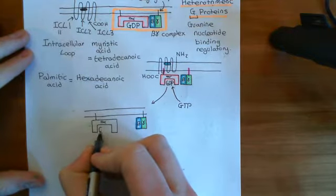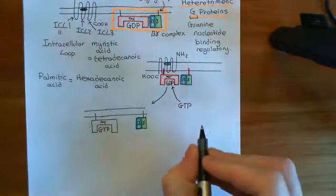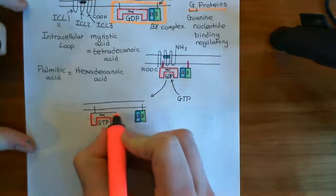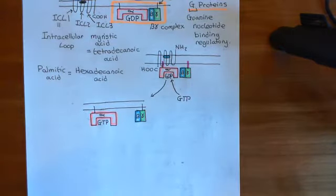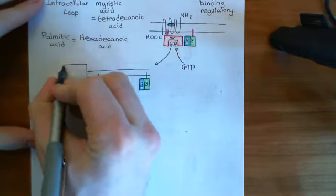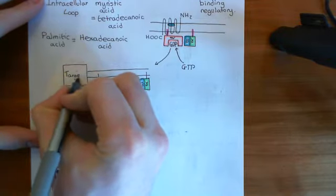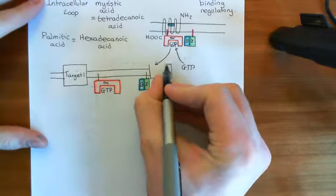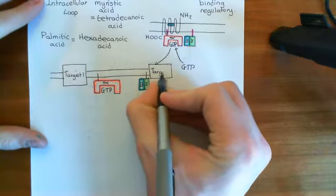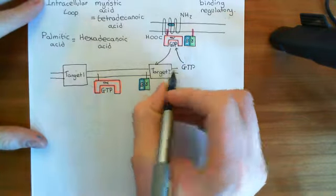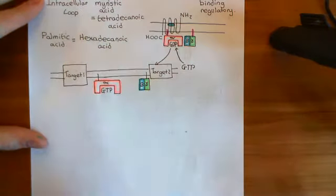Both the free alpha-GTP subunit and the free beta-gamma complex will go on to have signaling effects — they will interact with downstream targets. They'll bind to things that are in or attached to the plasma membrane, since they themselves are latched to the inner leaflet of the phospholipid bilayer.